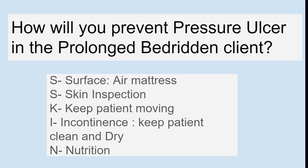How will you prevent pressure ulcer in a prolonged bed-ridden client? The prevention module of pressure ulcer is known as the SKIN module. S for surface — provide an air mattress to the client. Another S for skin inspection — keep checking the skin frequently. K for keep patient moving — change the position every 2 hours. I for incontinence — keep patient clean and dry. And N for nutrition — give high-protein diet to the patient.